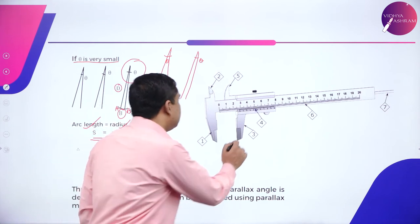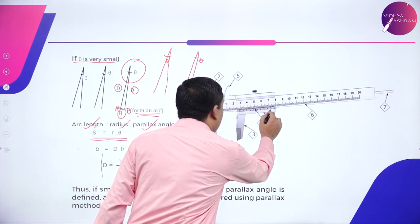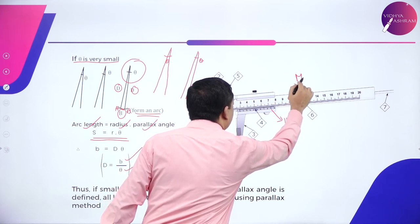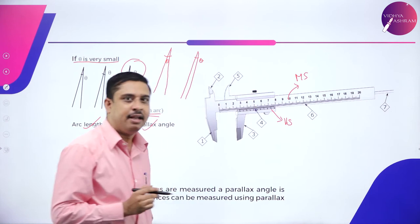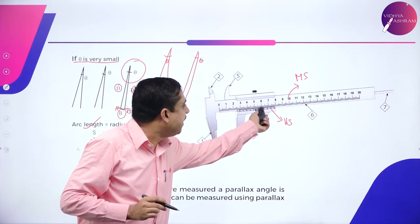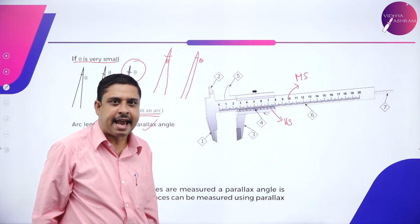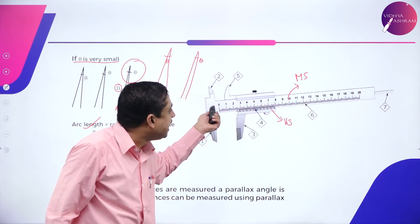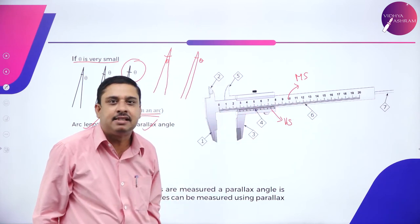Here, this is what is called the vernier scale and this is what we call main scale. You will be taught that there are 10 divisions on the vernier scale. There are 0 to 20 centimeters on the main scale.